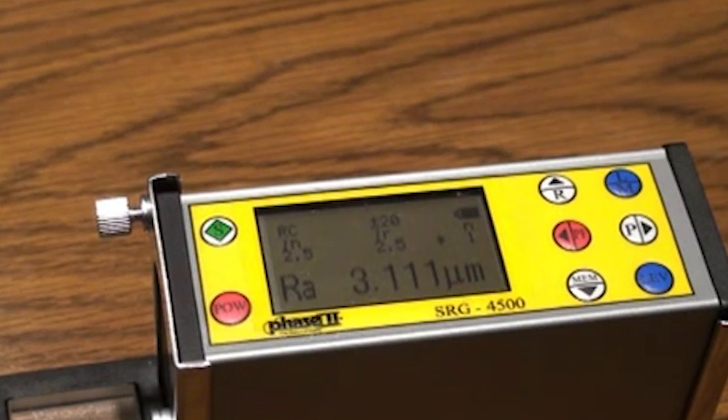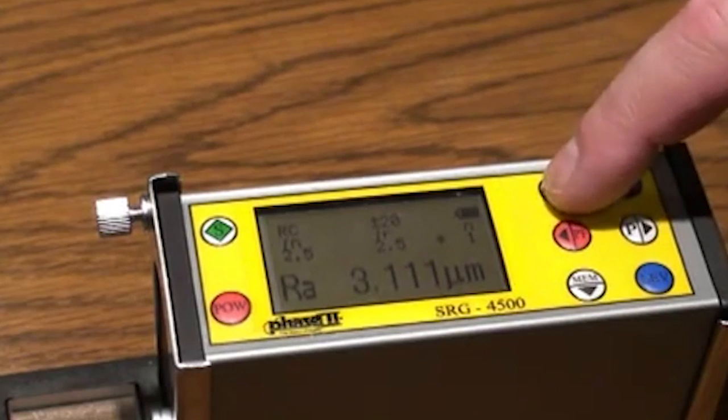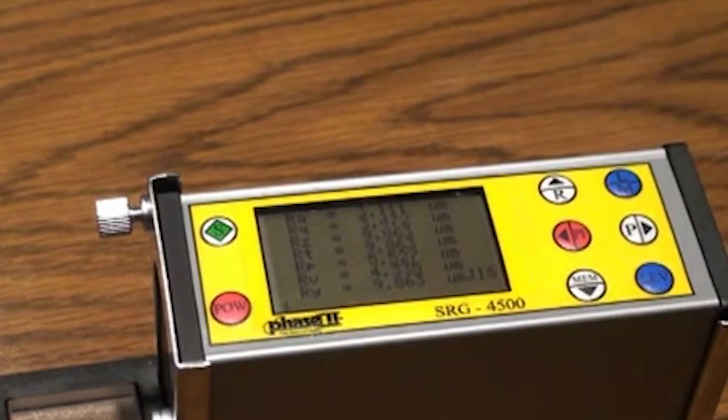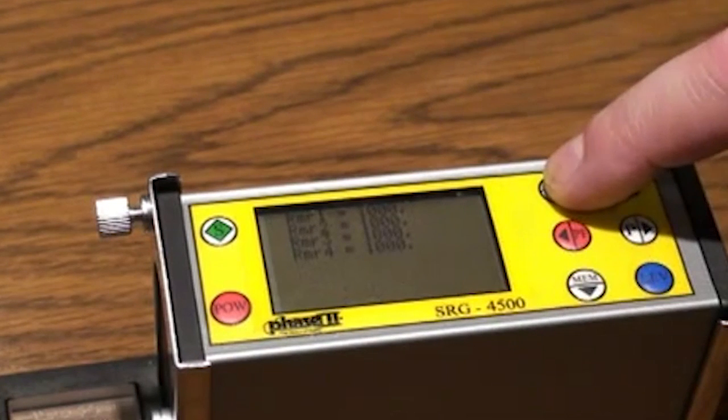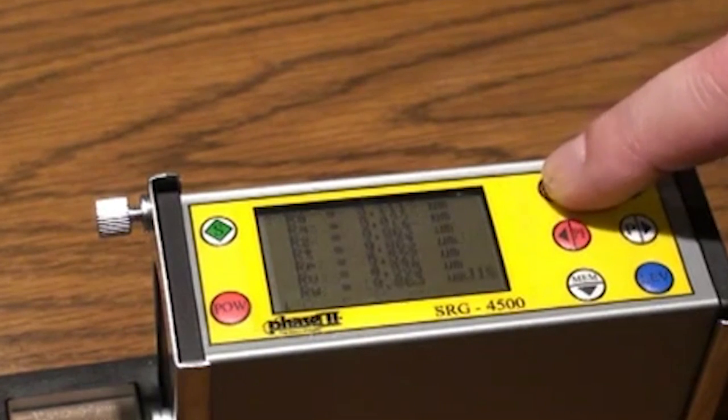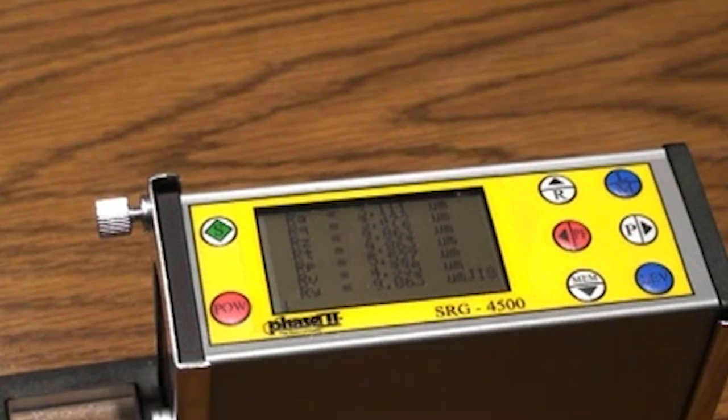To view data in other parameters, press the R button and use arrows to scroll. Press the LM button to exit.